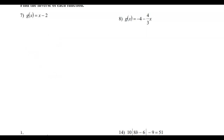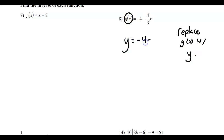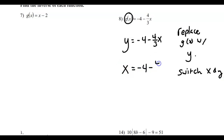Inverse functions are useful when you need to find inputs for any given output. Let's begin. Step one is to replace the g of x with a y — the only reason we do that is because g of x is a clunky symbol to work with, and it represents y anyway. Step two — this is the real inverse step — is we're going to switch the x and the y around. I'm going to put my x where the y is, and my y where the x was.